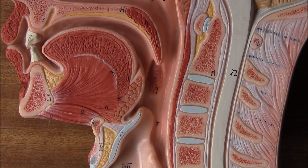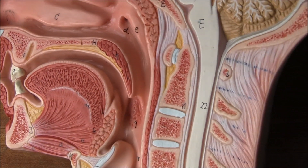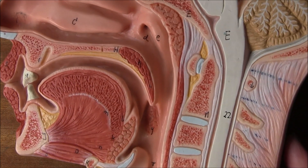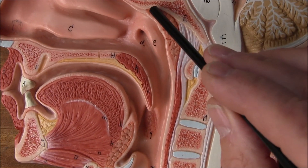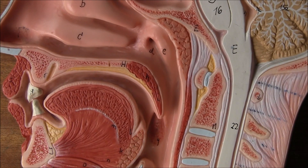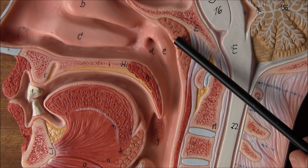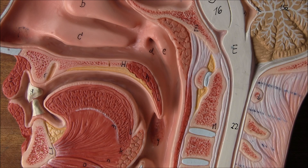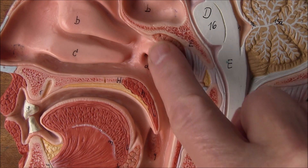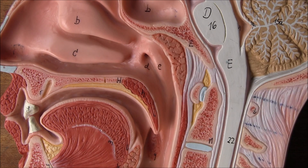Infection of the tonsils is common in children — these are the palatine tonsils, and further up we have the pharyngeal tonsils. When the pharyngeal tonsils are inflamed and enlarged, they change their name and we call them the adenoids. The adenoids and tonsils, like all lymphoid tissue, will enlarge when infected.